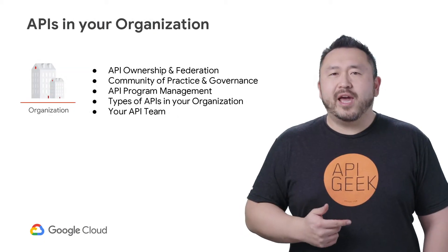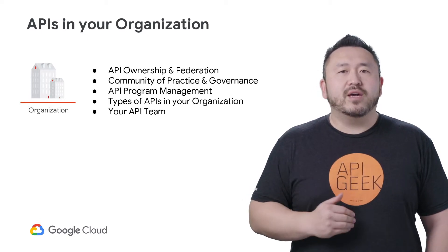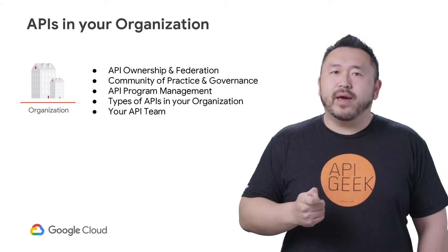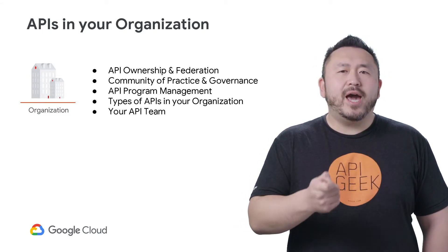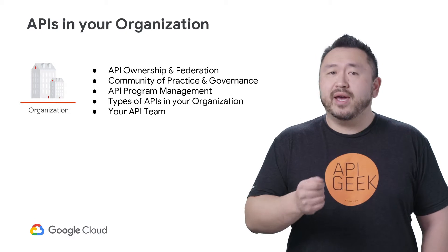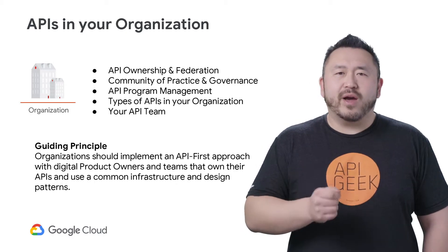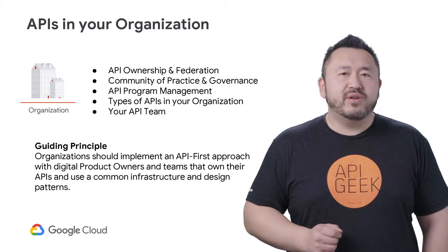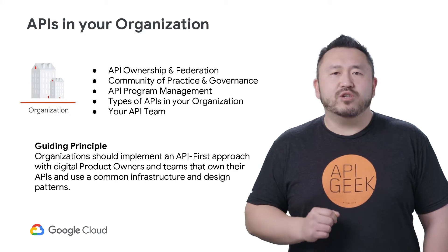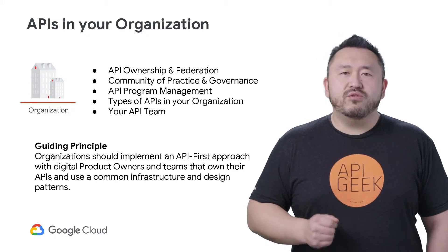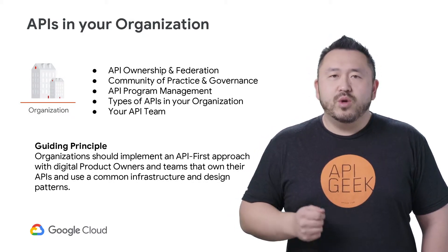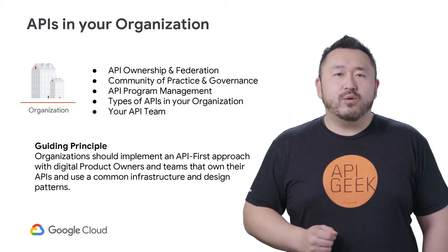In this section, APIs in your organization explains how API governance, ownership, and federation works. It's important to stress who and how APIs will be managed, as well as what types of APIs are in your organization, and what API teams and roles should be and what they do. Your guiding principle here is, as you move towards a comprehensive API program, you should have an API-first mandate from leadership. Direct your digital product owners and API teams to own their APIs and leverage a common infrastructure with common design patterns that flow throughout the entire organization.